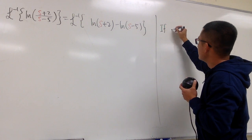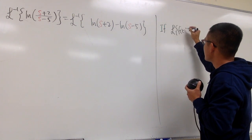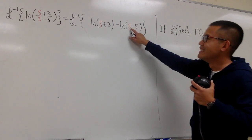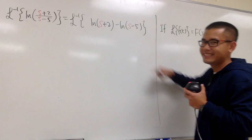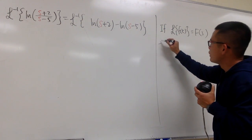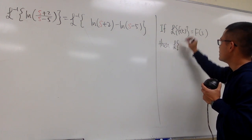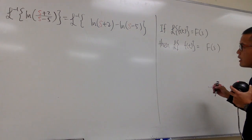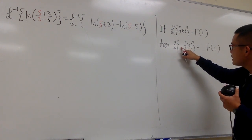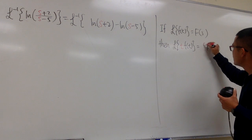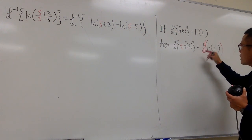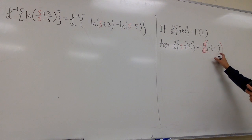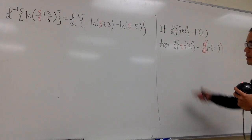If the Laplace transform of f(t) equals F(s), then one of our theorems says that as long as I multiply by t inside — that is, L{t·f(t)} — I can differentiate F(s) with respect to s on the right-hand side, and multiply by negative 1. So: L{t·f(t)} = -d/ds [F(s)]. That's the Laplace theorem for that.